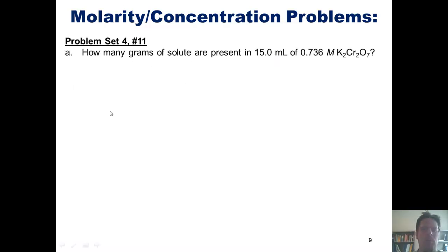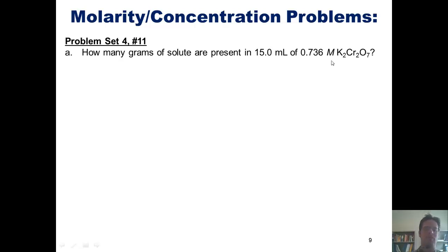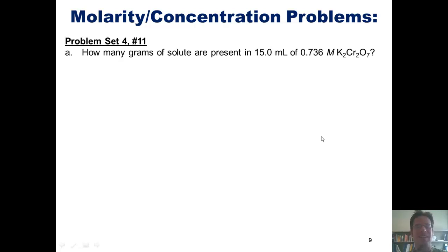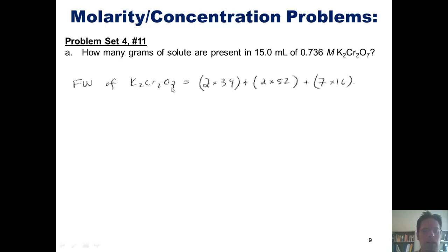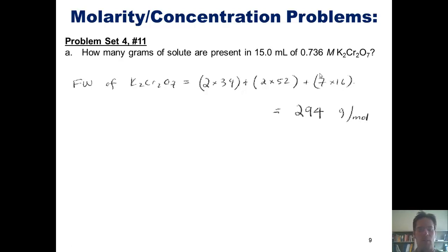Before we get into this problem, I have to point out one thing. This problem asks us to convert 15 milliliters of this solution into grams. We've seen that we can use molarity — moles per liter — to interconvert between volumes and moles. But to interconvert between moles and grams, as we learned in an earlier chapter, we use formula weight. So before I even get started with dimensional analysis, I'm going to calculate the formula weight of potassium dichromate, K2Cr2O7. Each potassium atom weighs 39, times 2; chromium weighs 52, there are 2; and oxygen weighs 16, there are 7. All added together, the total formula weight of potassium dichromate is 294 grams per mole.